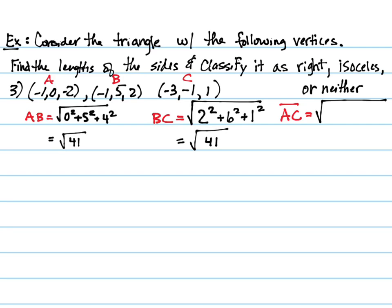For AC, the X values differ by 2, Y values by 1, and Z values by 3 — giving square root of 14. So we already said it's isosceles. At a glance, we should know it's definitely not right with those three values because the smallest side cannot be opposite the 90-degree angle. In any triangle, the biggest angle has opposite it the biggest side. So this one is isosceles only.